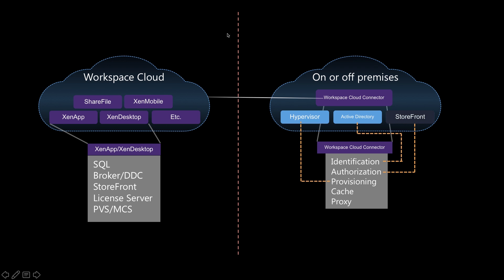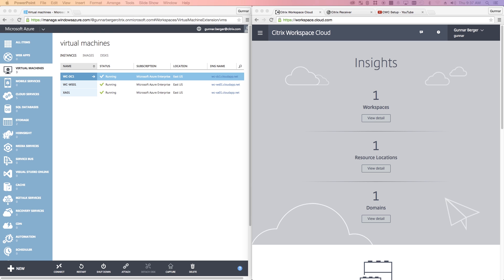What runs on the customer side, be it on-prem or off-prem, is just this thing that we call the Workspace Cloud Connector. This handles identification, authorization, and provisioning. For the purposes of today's video, I'm not going to be showing off provisioning. I just want to give you an idea of how all of this works. So we're going to be installing the Workspace Cloud Connector in real time. Let's jump into it.